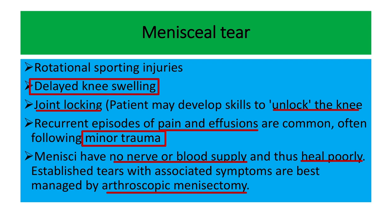Menisci have no nerve supply and no blood supply. They receive their nutrition directly from the joint fluid. Because there is no direct blood supply, they heal very poorly — that means the healing of the menisci tear is very poor. It should be best managed by arthroscopic meniscectomy.